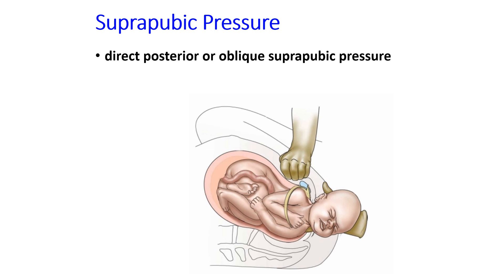Suprapubic pressure is applied per abdominally over the posterior shoulder. This pressure leads to abduction of the shoulder, which causes hyperflexion and decreases the biacromial diameter, helping to release the impacted shoulder.